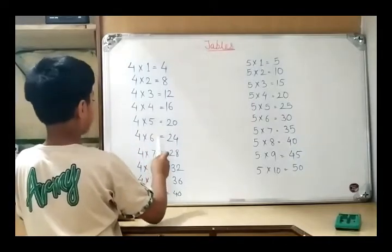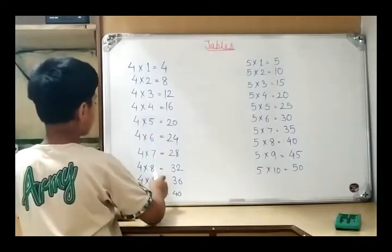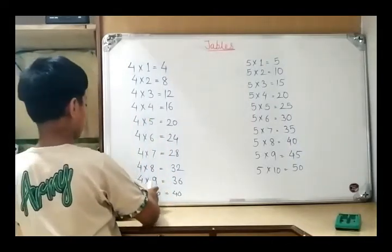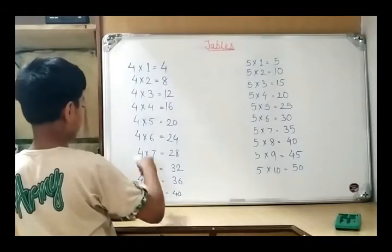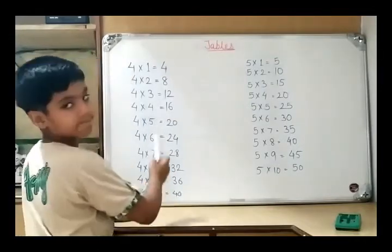4 7s are 28, 4 8s are 22, 4 9s are 36, 4 10s are 40.